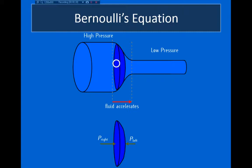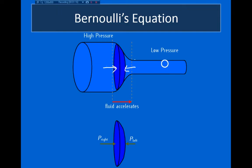So if we consider this dark blue section of water, there are two forces being exerted on it: the force caused by the pressure on the right side pushing the water to the left, and the force caused by the pressure on the left side pushing the water to the right. If the water is speeding up, then the pressure on the left side has to be greater than the pressure on the right side. So in the area where the pipe is thicker, the pressure must be higher, and where the pipe is narrower, the pressure has to be lower. That way the water gets pushed to the right — the pressure behind it is larger than the pressure ahead of it.